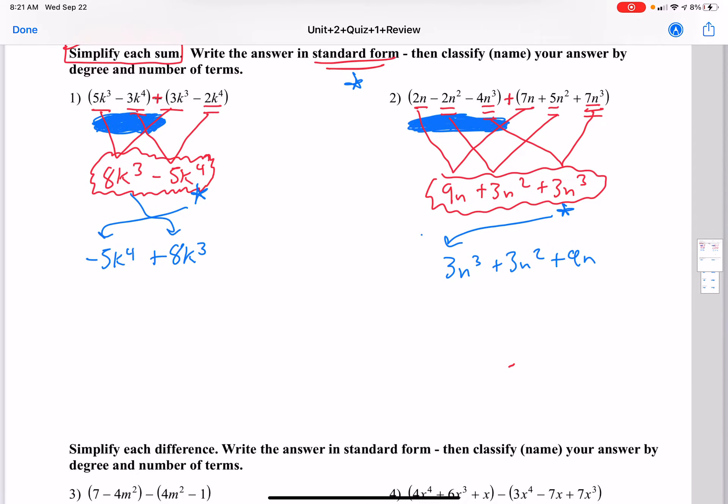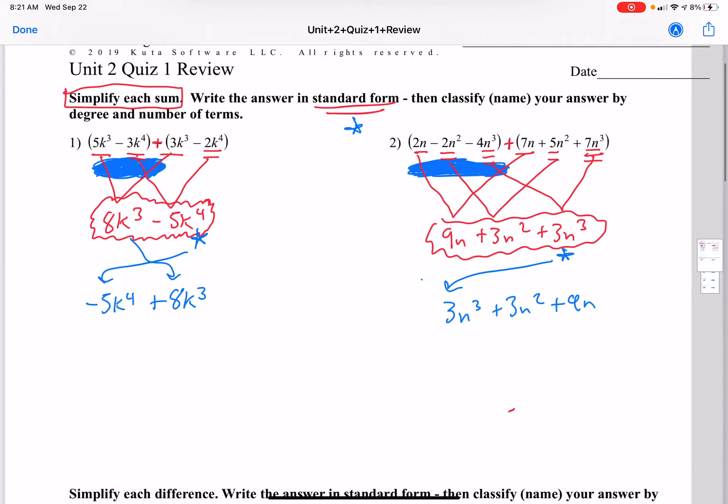So now we've done the standard form, we've simplified the sum, we've done the standard form. Now we've got to classify or name your answer by degree and number of terms. This is on page 1 through 3 in your packet. You need to study this or you will not do well on the quiz. So if you look at the degree, the degree is the largest exponent, which is 4. And the number of terms is 1, 2, there are two terms there.